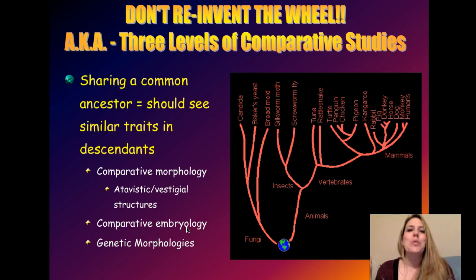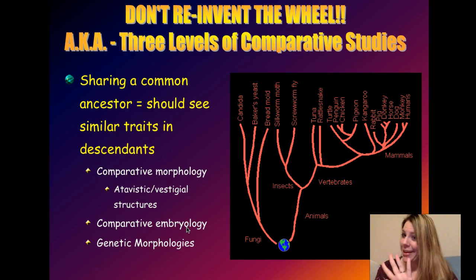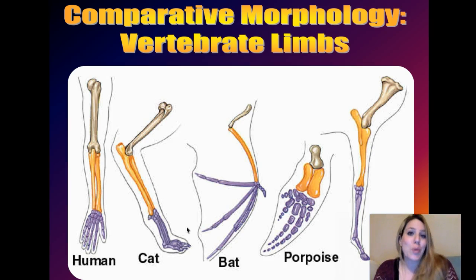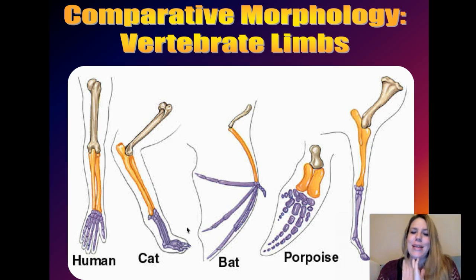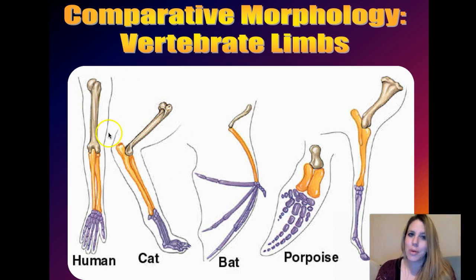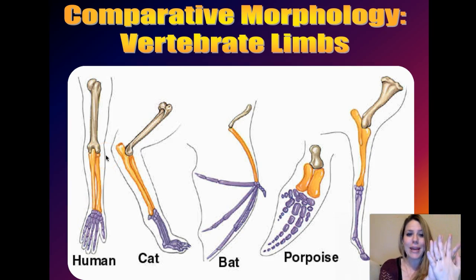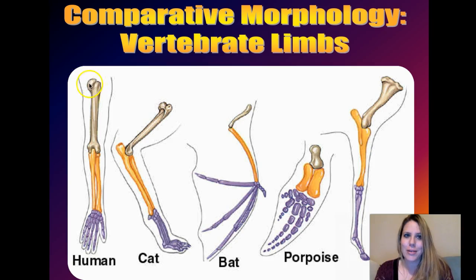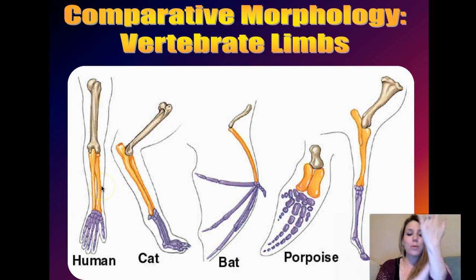Let's get started with comparative morphology and look at our hands. If you look at vertebrates — organisms like us with backbones — you can trace the exact same bones within the limbs. Starting with the human: above the elbow we have the humerus bone, which attaches to our shoulder. Then in our forearm we have two bones, the radius and the ulna.